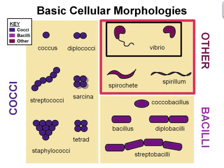If found in pairs, they are called diplococci. Threes are a triad, and groups of four are called tetracoccus. Other group types include streptococcus, which are cocci in chains, sarcina, cubes of eight, and staphylococcus, irregular clusters. Diseases caused by cocci include, but are not limited to, pneumonia, tonsillitis, endocarditis, meningitis, sepsis, and various skin diseases.